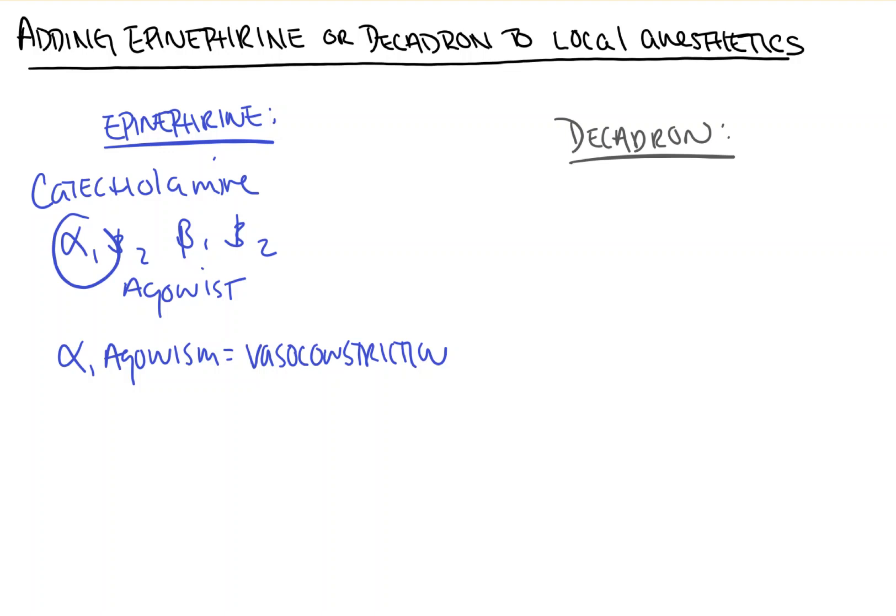Now there are two types of local anesthetics. There are esters, which only have one 'i' in them. Things like cocaine are esters, and these are metabolized by plasma cholinesterases. We have amides, which have two i's, and these are broken down in the liver. Notice both of these require that the local anesthetic gets back into the blood.